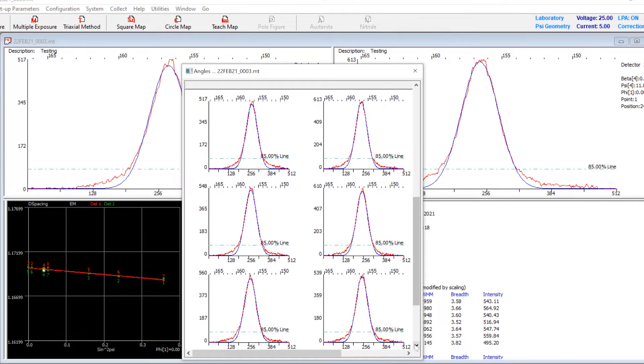The iXRD uses a time-tested sine squared psi technique, which is used throughout industry because of its reliability, accuracy, and feedback when there are issues with a measurement.